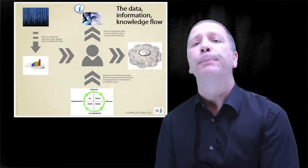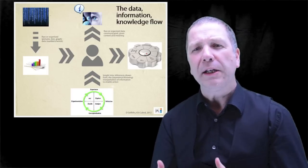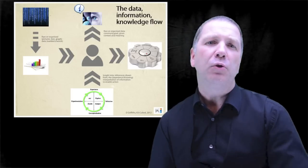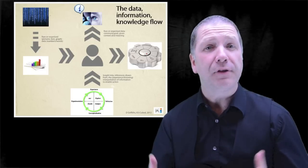You're going to see that in this diagram. Data is raw or organized numbers or words. When we're talking about organized, we're talking about text, pictures, graphs, etc.